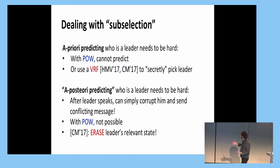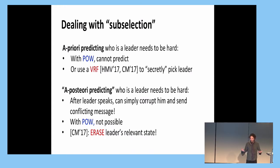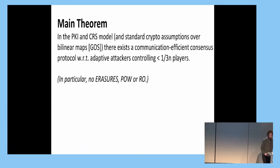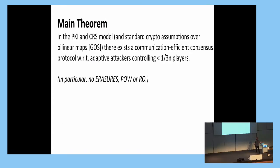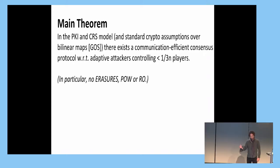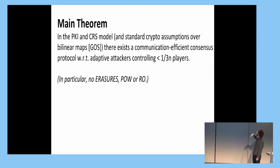One issue with the erasure approach is that it does not seem rational to erase your state, because doing so loses a capability you could use later. Our main result shows you can overcome this issue without dealing with erasures at all. We present a protocol in the PKI and CRS models — no random oracle needed — assuming standard crypto assumptions over bilinear maps, specifically non-interactive zero-knowledge with adaptive security, that handles the same one-third corruption without erasures, without proof of work, and without random oracles.